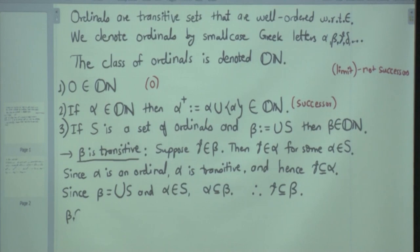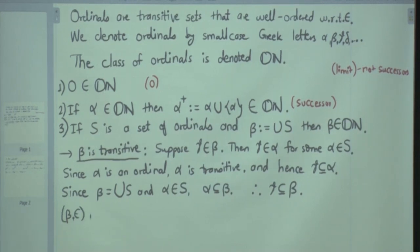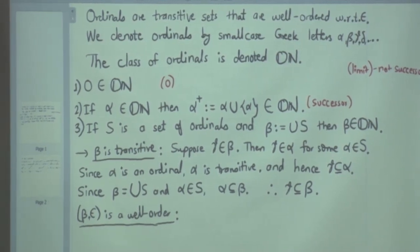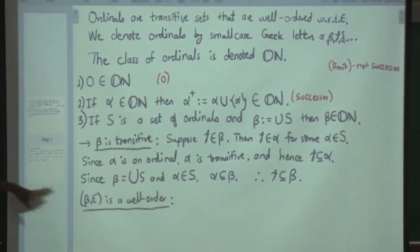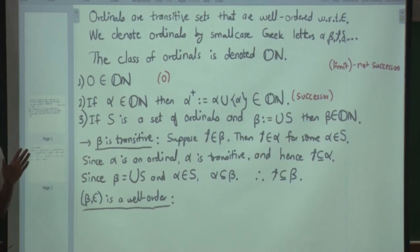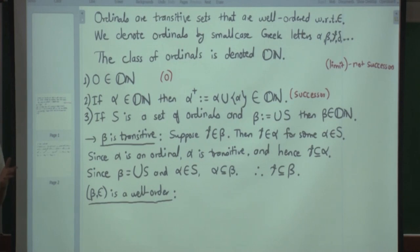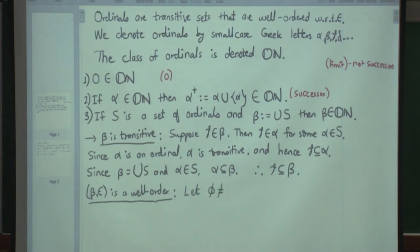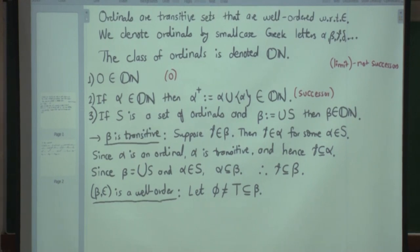Next we show that beta with the membership relation is a well-order. A well-order means every non-empty subset has a least element. Let T be a non-empty subset of beta. We want to find the least element. Since T is non-empty, it must contain some element gamma, and gamma belongs to beta, so gamma belongs to some alpha in S.